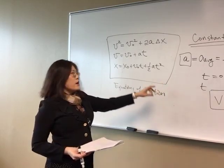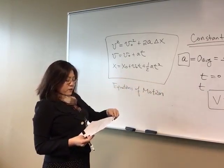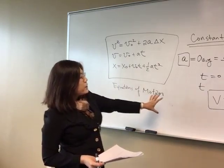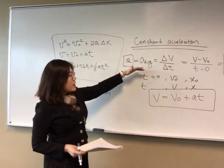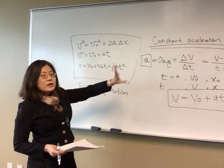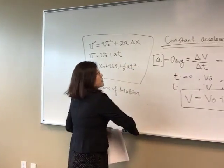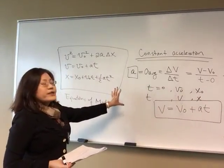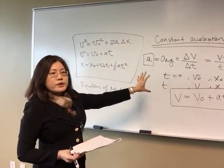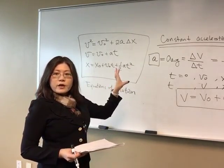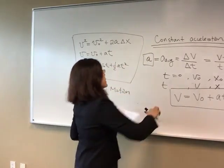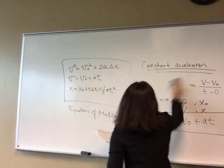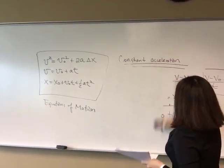Rearranging, A equals (V minus V₀) over T. Multiplying T on both sides and putting V on the left-hand side, you get your velocity equal to initial velocity plus A times T. So this is your first equation of motion — based on the special case when acceleration is a constant. The final velocity equals the initial velocity plus the acceleration times time.